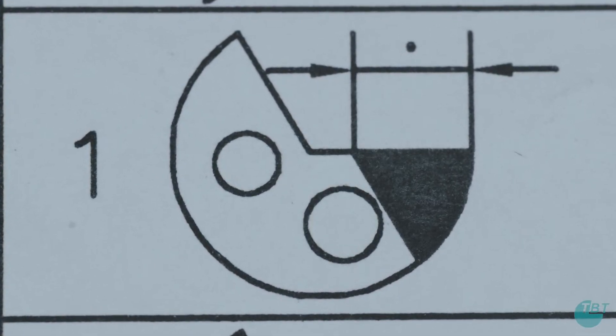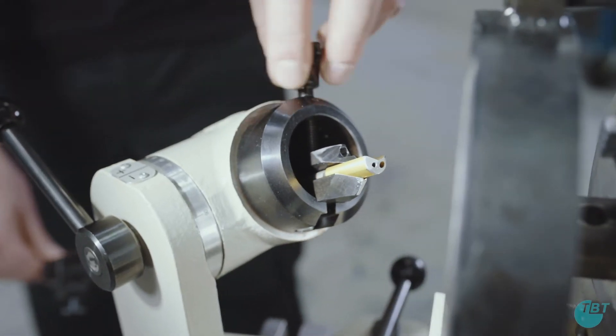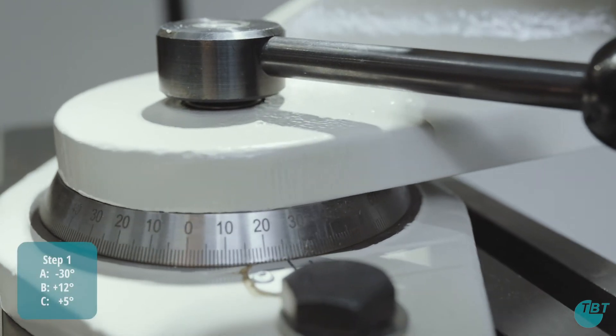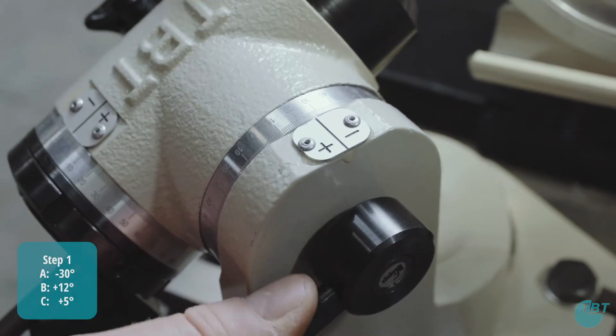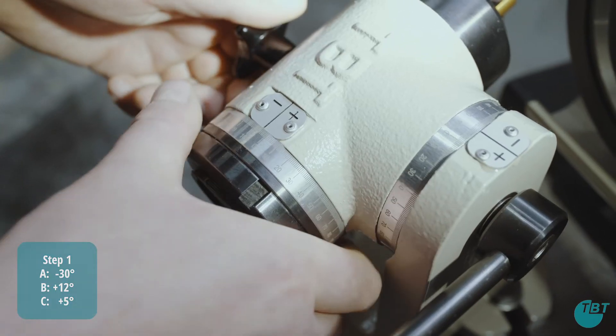We start by grinding the outer cutting edge. To do this first clamp the worn tool into the clamping device. Set the A axis to minus 30 degrees, the B axis to plus 12 degrees and the C axis to plus 5 degrees.